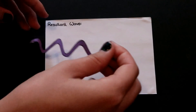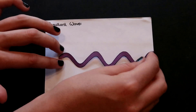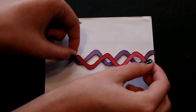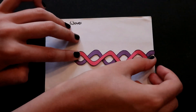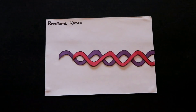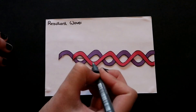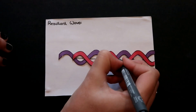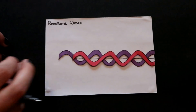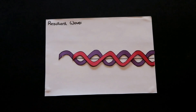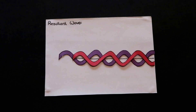We can do the exact same thing if we look at what happens when we have two waves which are the exact opposite of each other. As we can see, where there's a peak on the first wave, there's a trough on the other, and where there's a trough on the first wave, there's a peak on the other. When we go along as before and add them together, we can see that they completely cancel each other out.